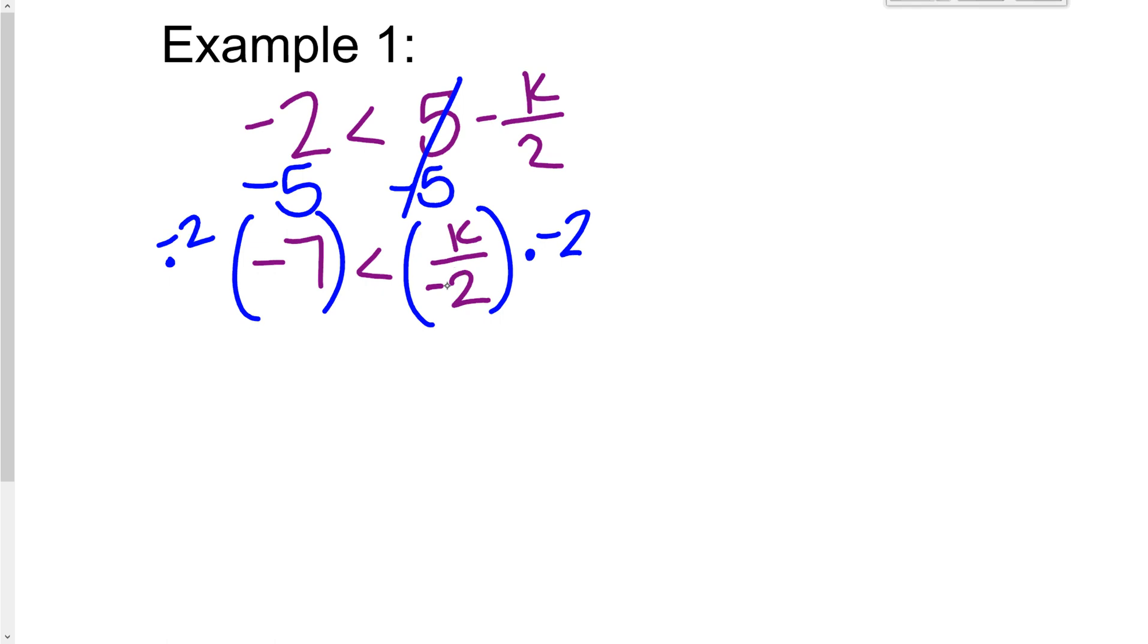Because if I don't, if I just multiply by two, I get negative k. I don't want negative k, I just want k. So I multiply both sides by negative two.